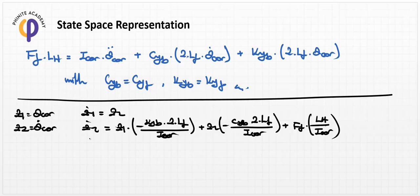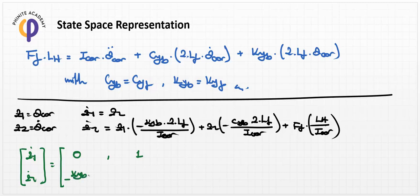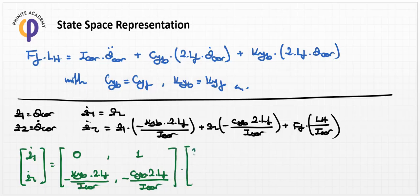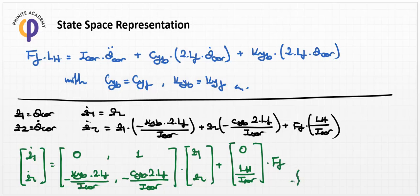And theta_dot_dot_car equals z_dot2. The total state space representation is: [z1_dot, z2_dot] equals A times [z1, z2] plus B times ff, where the A matrix is [0, 1; minus k_yb times 2lf divided by I_car, minus c_yb times 2lf divided by I_car], and the B matrix is [0; lh divided by I_car]. This is the state space form for the suspension system dynamics.